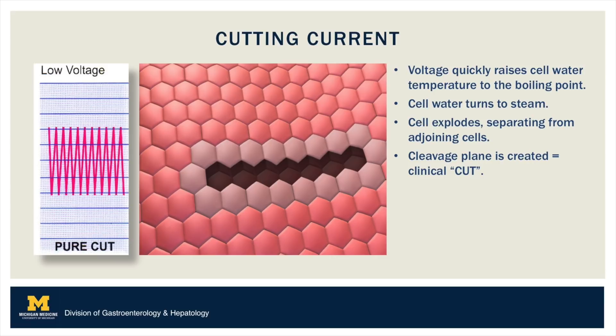A pure cutting current uses heat to turn cellular water to steam by quickly raising the temperature to the boiling point. The rapid fluid expansion from heat causes cellular bursts, a cleavage plane, and ultimately a clinical cutting effect.